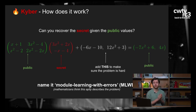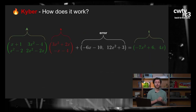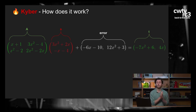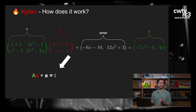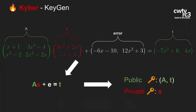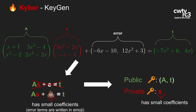Wir machen Modular Learning mit Fehlern. Wir haben eine Matrix A und den geheimen Vektor S. Dann packen wir einen gewissen Fehler E dazu, dass das Lösen schwerer wird, und wir haben dann einen öffentlichen Wert T. Die Formel lautet: A mal S plus E gleich T. Der öffentliche Schlüssel ist die Matrix A und das Ergebnis T. Der private Schlüssel ist S. Das ist alles, was wir brauchen, um ein Schlüsselpaar in Kyber zu erstellen. Wir müssen aufpassen, dass der private Schlüssel und der Fehler kleine Koeffizienten haben.